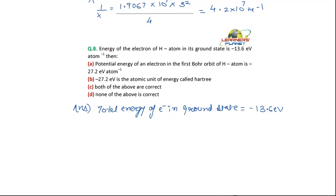The expression for potential energy comes out to be minus ZE squared upon R. The expression for kinetic energy is half of mv squared, where m is the mass and v is the velocity of the electron.